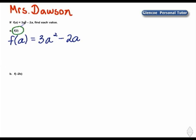Notice that a has been replaced with 2. So f(2) is equal to 3 times the square of 2 minus 2 times 2. Every place there was an a in the original function, there is now a 2.